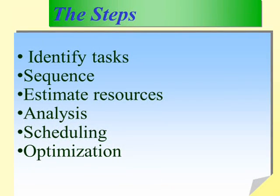The steps are: first, identify the tasks and sequence the tasks. Estimate the resources both in terms of duration and the resources you'll use for each task. Then do the analysis. The analysis will involve many things such as buffer, resource leveling, and critical chain. Then prepare the schedule and optimize it. There are various forms of optimization that we need to do.